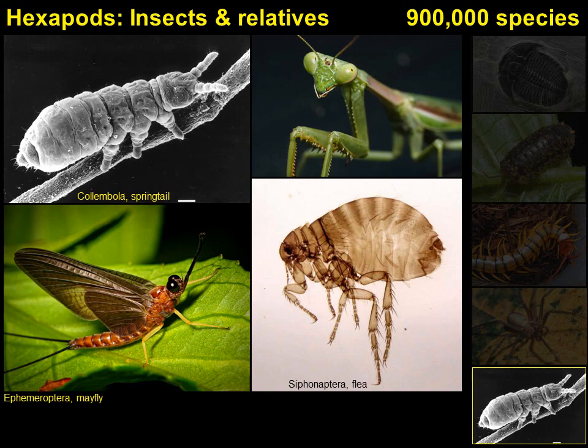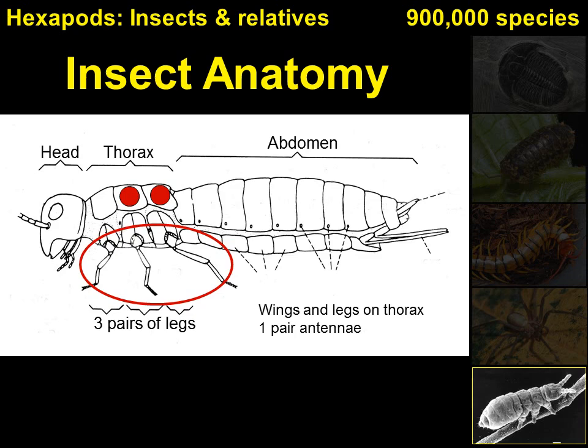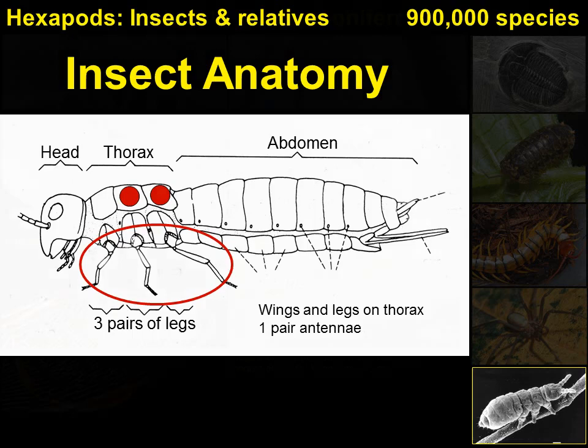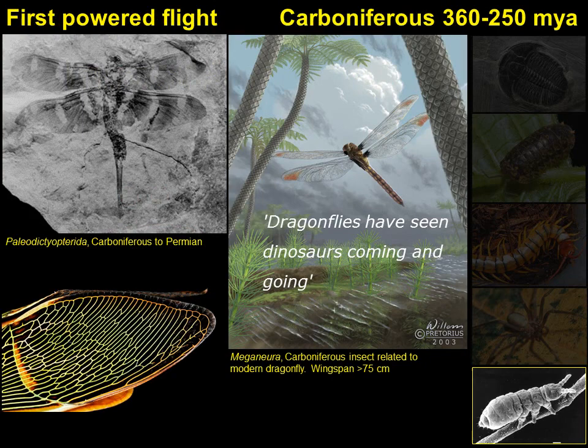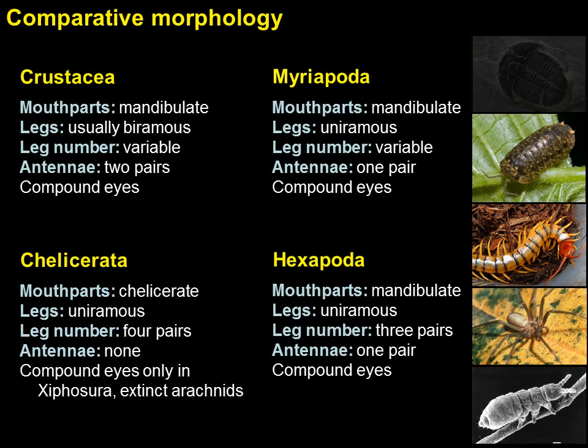Hexapods — the insects and their relatives — are the largest arthropod group with about 900,000 species described. Insects have their bodies divided into three tagma: the head, thorax, and abdomen. Most insects have two pairs of wings arising from the second and third segments of the thorax, and three pairs of legs arising from the thorax. The first powered flight was made by insects during the Carboniferous period. Early flying insects included large dragonfly-like animals with wingspans approaching one meter. Some insect groups, such as fleas, have secondarily reduced or lost wings.